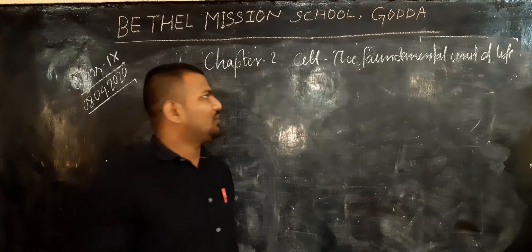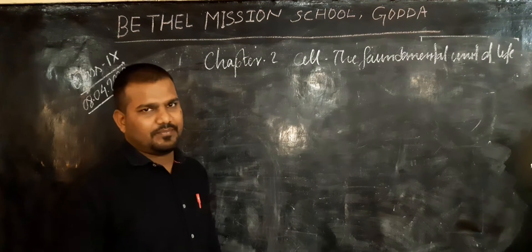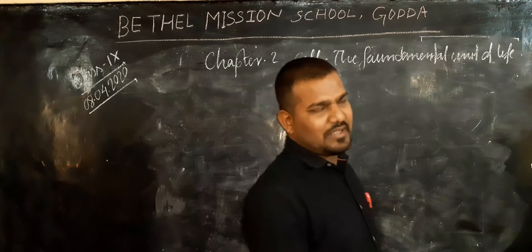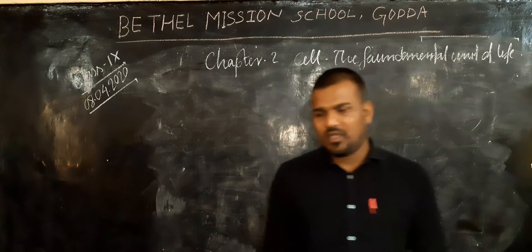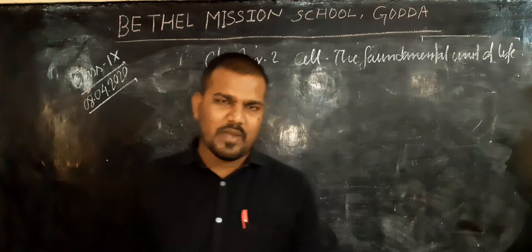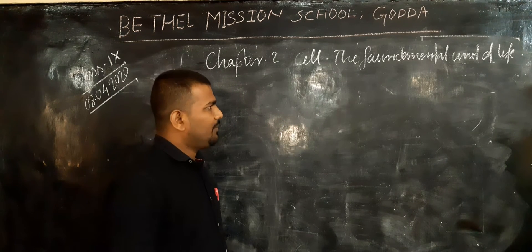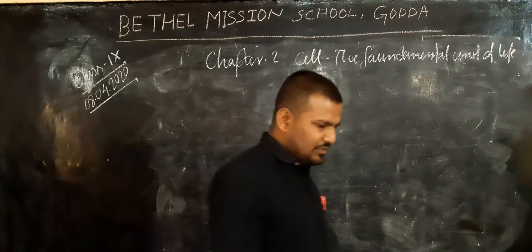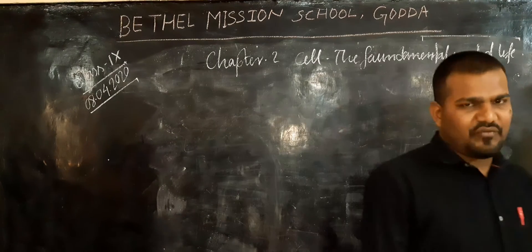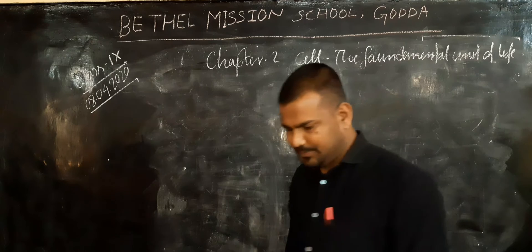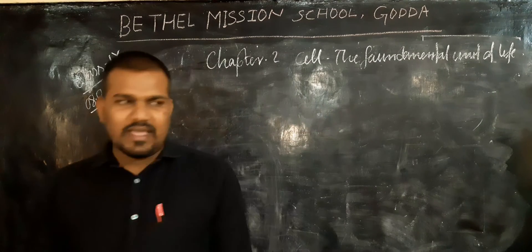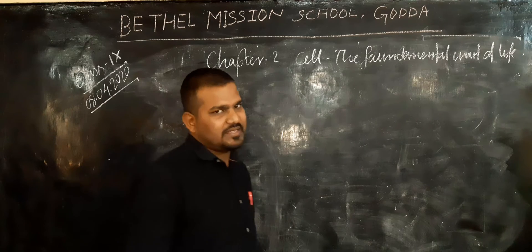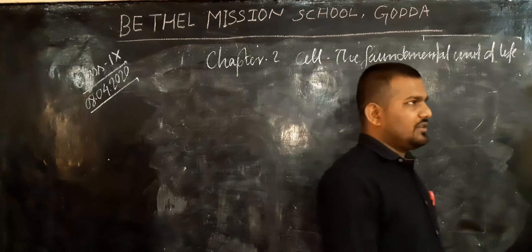We already know about the cell. We know that a cell is termed as a basic unit of life because all living organisms are made by one or more cells. We also know that the cell is known as the structural and functional unit of life, because behind the structure of every living organism, we can find the cell, and the cell's function constitutes the organism's function.